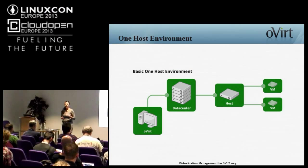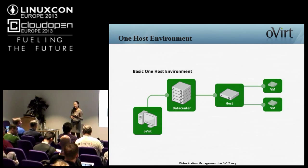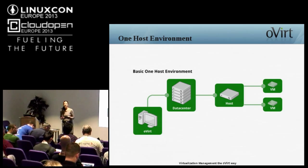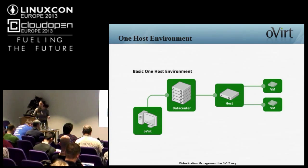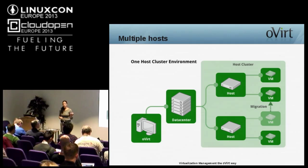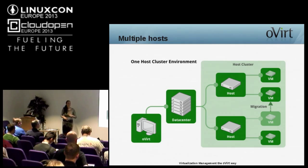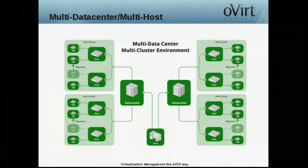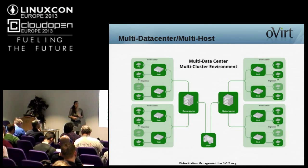What kind of setup do we support? Basic stuff like one host with multiple virtual machines in a data center — a logical entity that is a container for all resources required by the virtual machine, like storage and network. A more interesting deployment would be a multiple-host environment with a cluster. A cluster is a migration domain in oVirt, meaning all virtual machines can migrate from one hypervisor to another. A more interesting setup would be multiple data centers, multiple clusters in each one, with VMs migrating between different hosts in the same cluster.